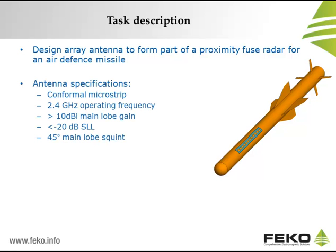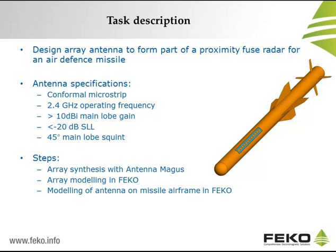This antenna will have to satisfy the following specifications: it has to conform to the airframe of the missile, it must operate at 2.4 GHz, we want 10 dBi gain in the main lobe, interference from side lobes has to be minimized, and the main lobe should be able to squint 45 degrees forward to detect a target. We will start by performing the array synthesis in Antenna Magus before modeling the antenna in FEKO. Once the antenna is confirmed, we will mount it on the missile and simulate again to test if it works properly in the intended environment.